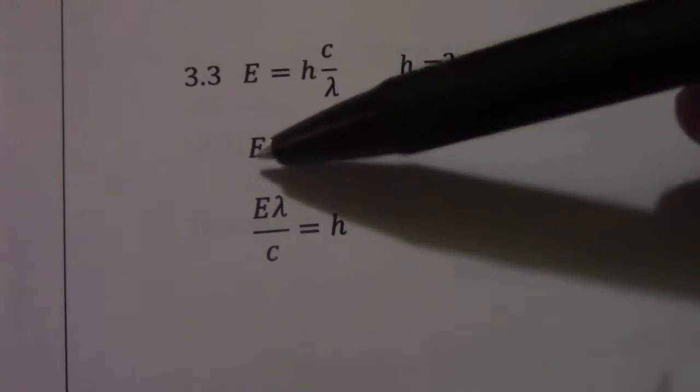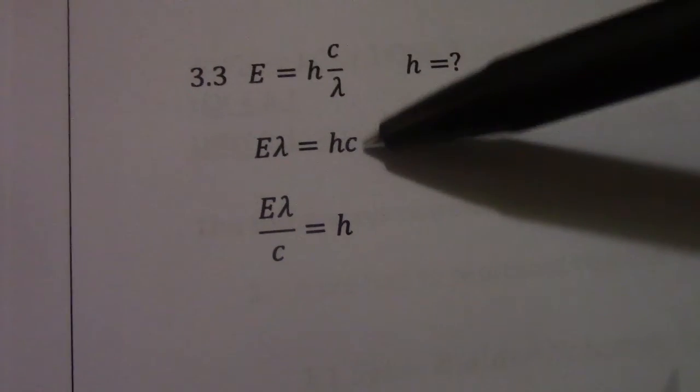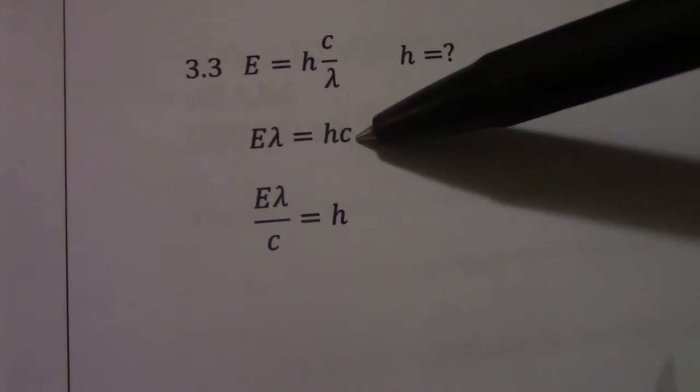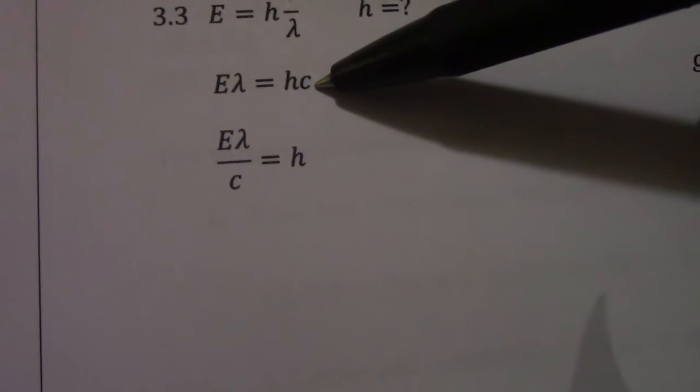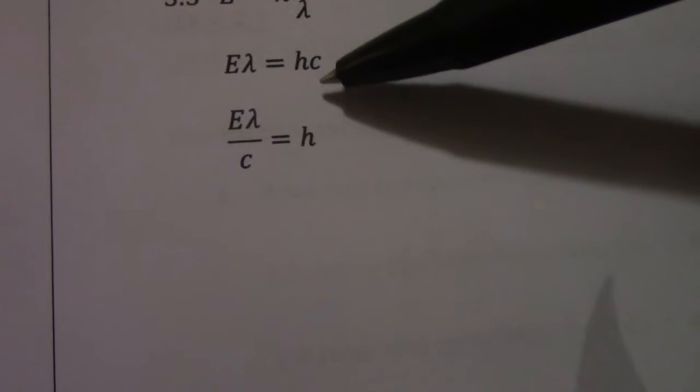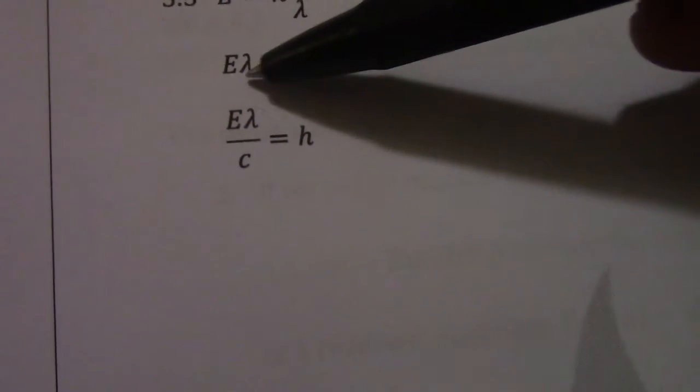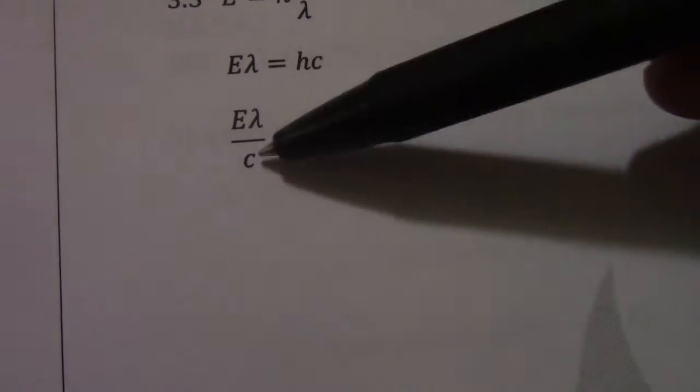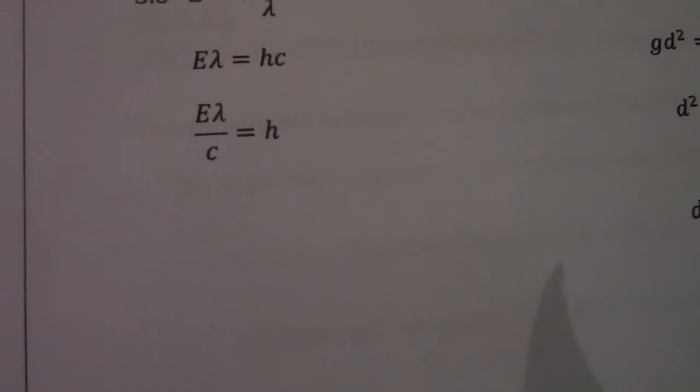So e times lambda leaves behind h times c. I want h on its own to get rid of c. I divide by c. So hc divided by c gives me h. That becomes energy times lambda divided by c.